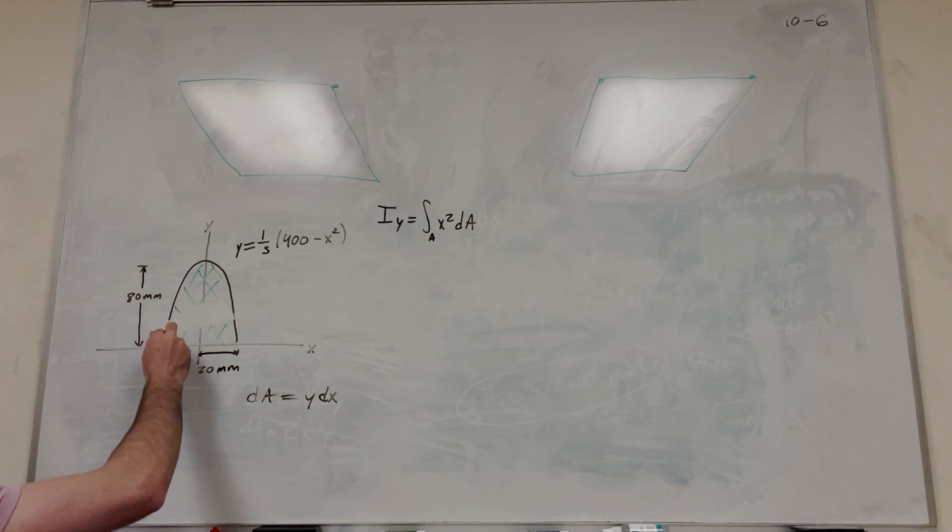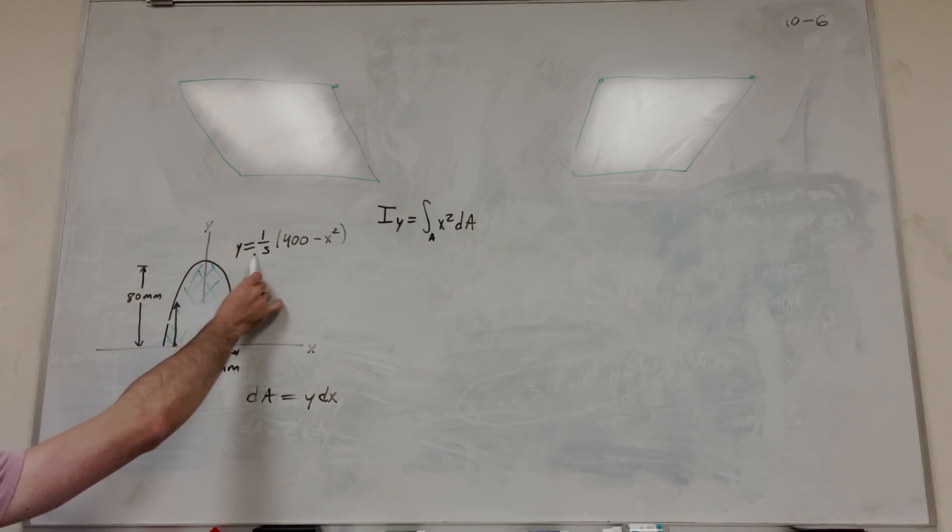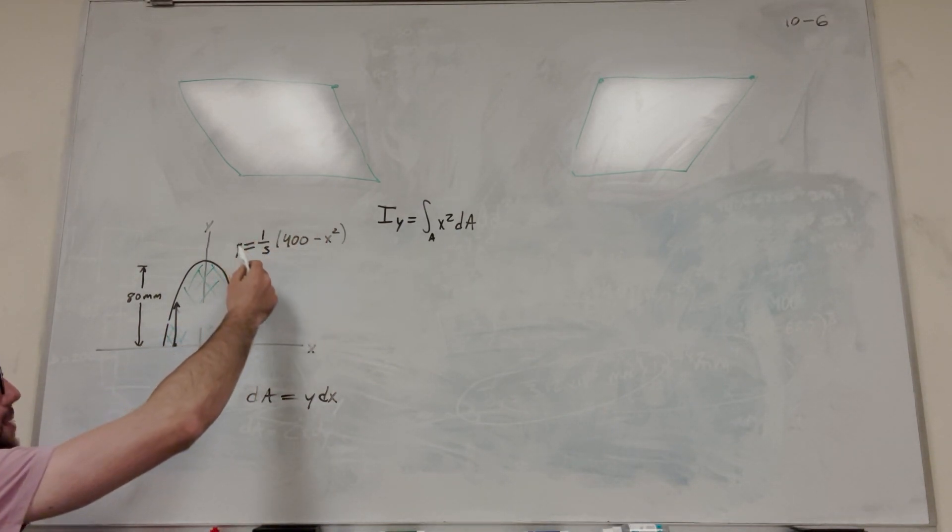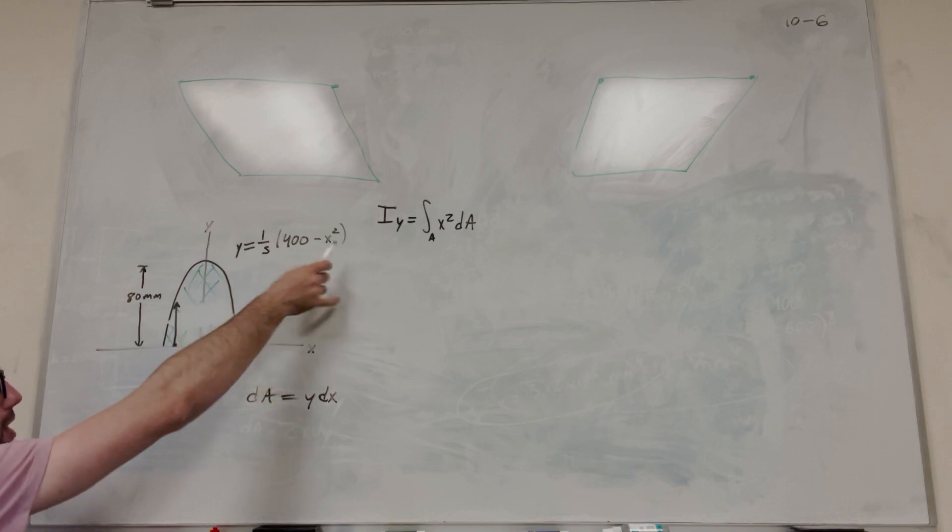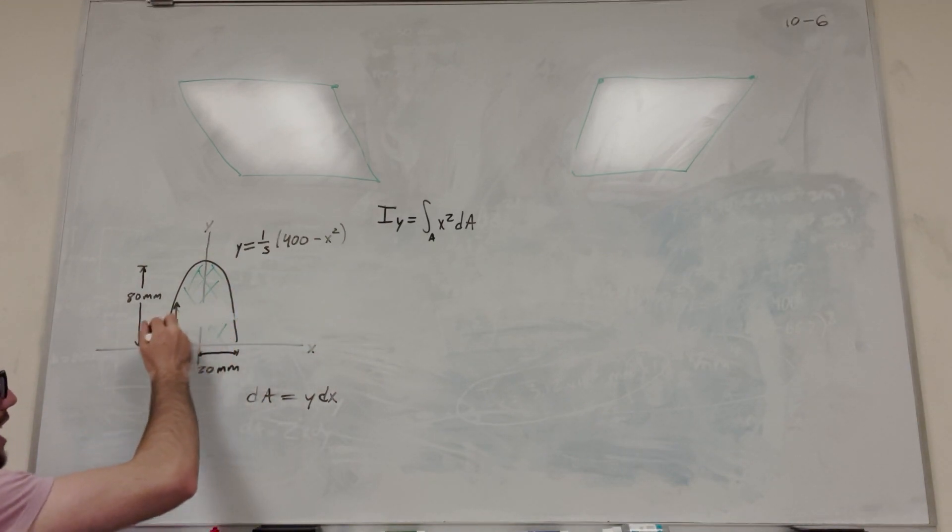So y is obviously the distance from here to wherever we are underlined, which is defined very simply by this equation here. So we already have y. And then dx is how far up we go. So dx is going to go from wherever we start to wherever we end.